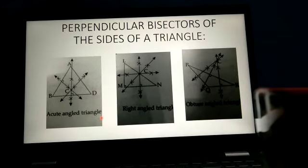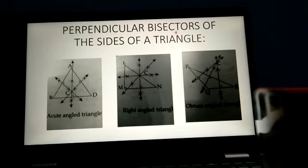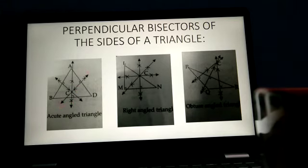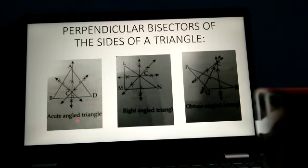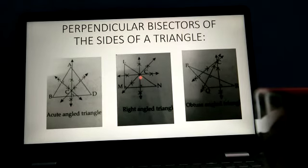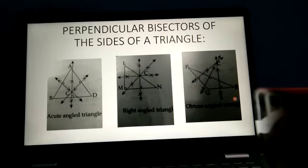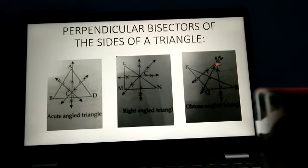Now we will study the perpendicular bisectors of the sides of a triangle. We already saw the perpendicular bisector of a line segment. Here, for an acute angled triangle with vertices A, B, and D, the perpendicular bisectors are drawn and the point of intersection is shown as point C. In a right angled triangle, the perpendicular bisectors of all three sides are drawn and their point of intersection lies on the hypotenuse. For an obtuse angled triangle PQR, the point of concurrence lies outside the triangle.